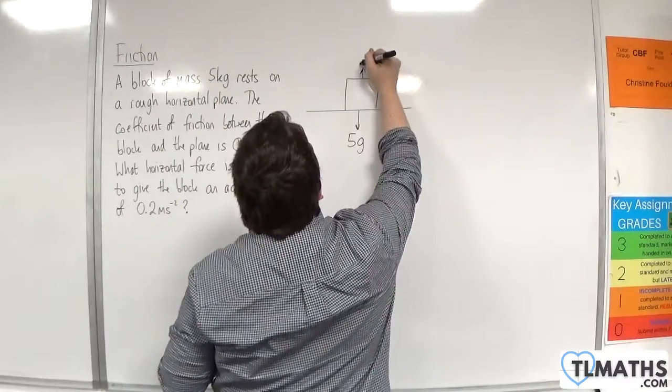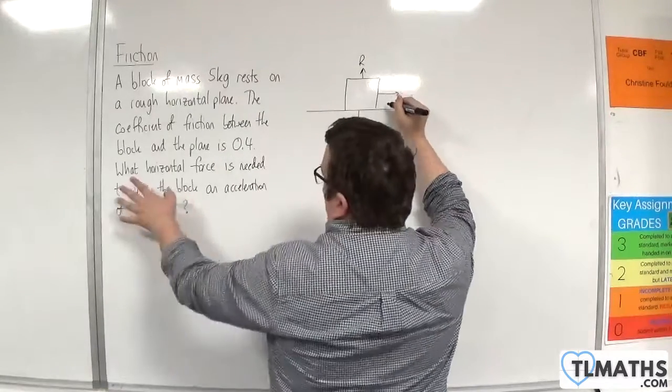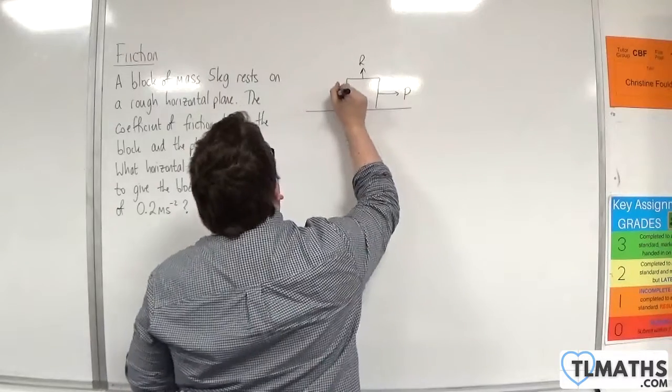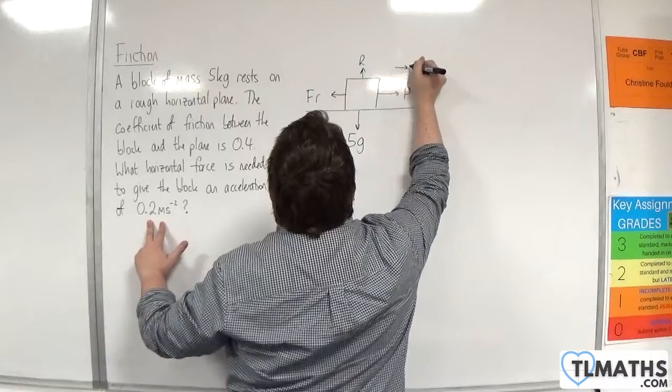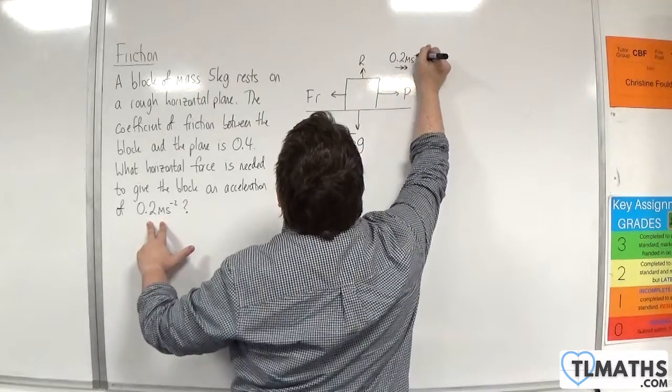There will be a normal reaction force because it is in contact with the surface. There is a horizontal force being applied, I will call that P. And friction will be working against the direction of motion. We need it to be accelerating at 0.2 meters per second squared, and that will be to the right.